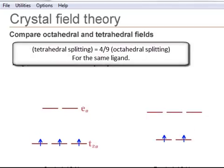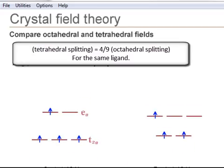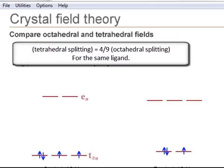For the same type of ligands, the tetrahedral field splitting is equal to four-ninths that of the octahedral splitting.